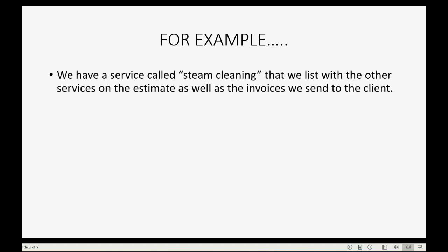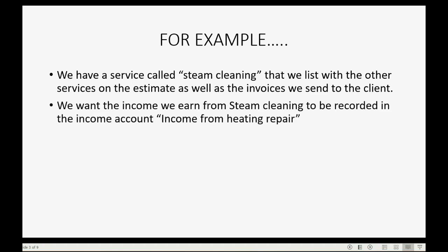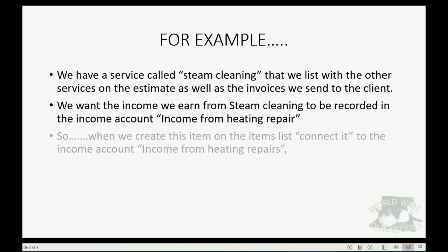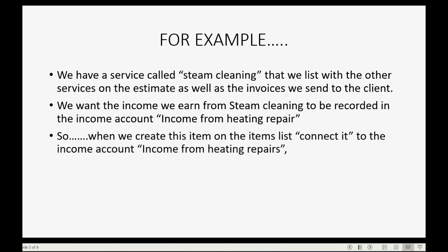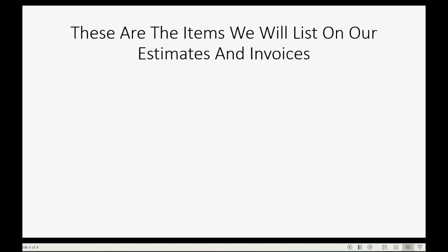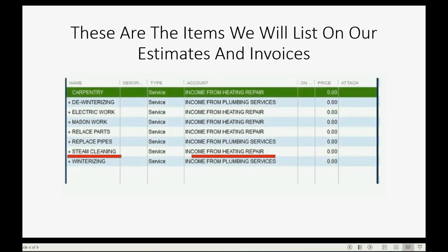For example, we have a service called Steam Cleaning that we list with the other services when we make an estimate or an invoice and send out that document to the client. We want the income that we earn from Steam Cleaning to be recorded in the income account called Income from Heating Repair. So when we create this item on the Items List, we will connect it to the income account called Income from Heating Repair. These are the items that we will put on our Estimates and our Invoices. Notice on the left you have the item name exactly as it will appear when you list it on an invoice or an estimate for the client, and exactly to the right on the same row is the income account in the chart of accounts that will track and categorize all of the items that we put on an invoice or estimate.